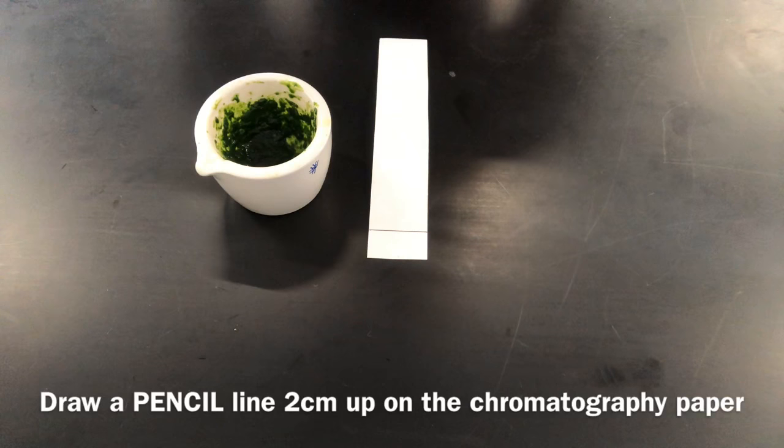After you've done this, then you need to prepare your chromatography paper. Now, this does actually work best with thin layer chromatography paper, but you can also use regular chromatography paper. To prepare, you're going to obtain a pencil, and it is important that it's a pencil, not a pen, because a pen contains other pigments. Use the pencil to draw a line on the chromatography paper that's about two centimeters up from the bottom of the paper.